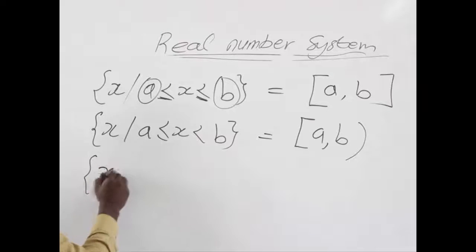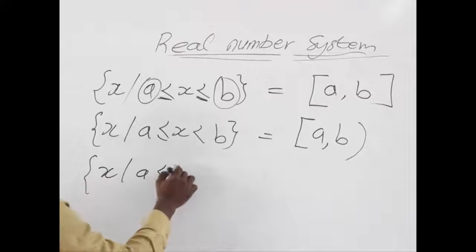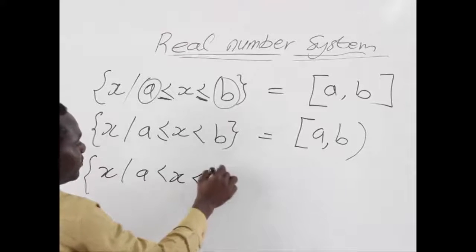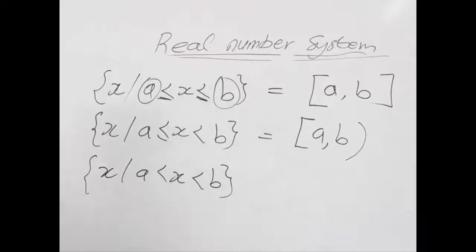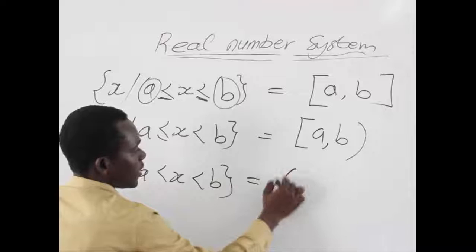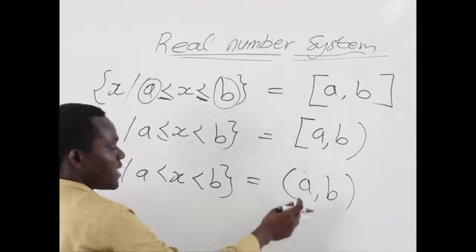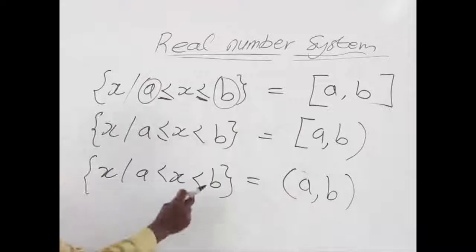Also when we have the third form where none of the limits are included, we can use the brackets only to show that we are moving from a to b but a and b are actually not part of the range.